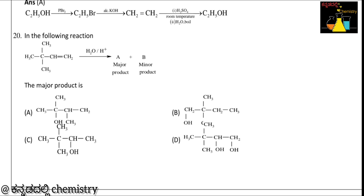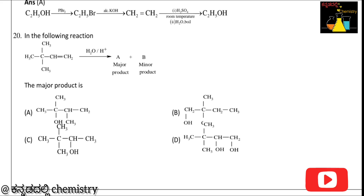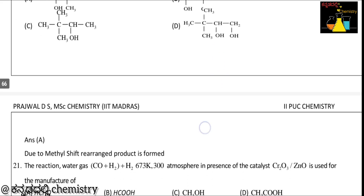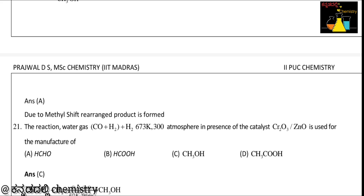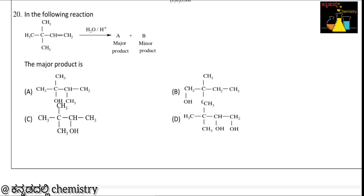The 20th question: the major product is — this is the same question. In the last video, organic chemistry has a twist. For example, this is Alkyne in the presence of H2 or H+, which is acidic medium. This gives A and B products — this is the major product and this is the minor product. Due to methyl shift rearrangement, the product forms in the same form, and product A formation is the result. So A is the right answer.